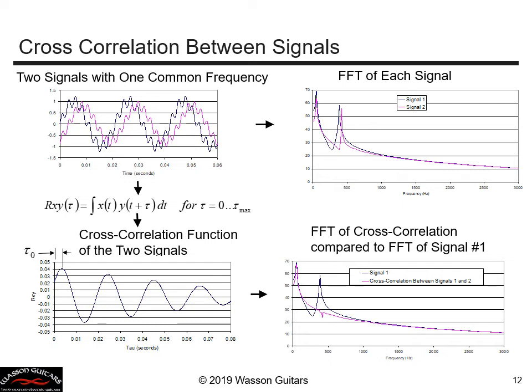We take each of the two signals and compute a cross-correlation function. We simply create a new variable tau and allow it to vary from zero to some large number. We shift the second signal by tau amount, and for each tau we multiply and integrate to create this cross-correlation function as a function of tau.